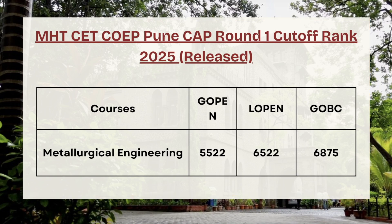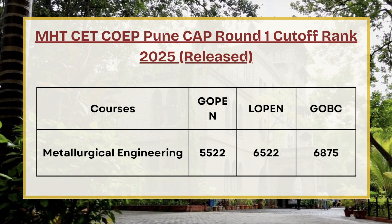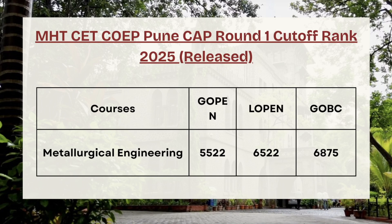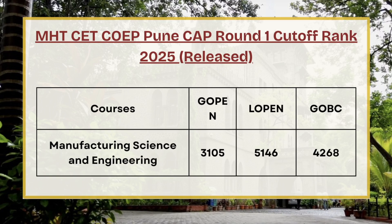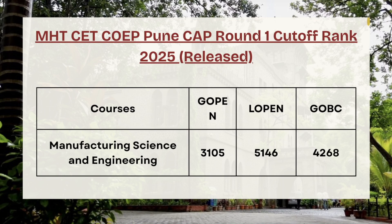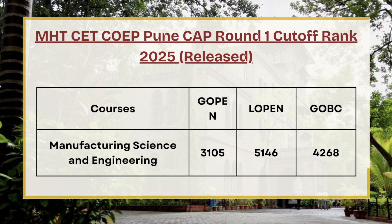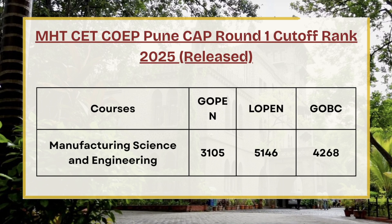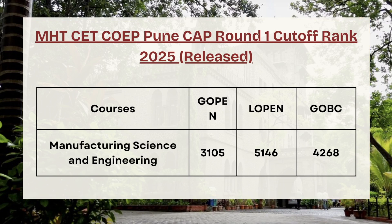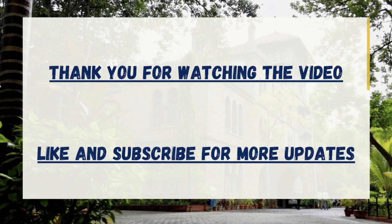For Metallurgical Engineering, for G-Open the cutoff rank is 5522, for L-Open the cutoff rank is 6522, and for GOVC the cutoff rank is 6875. For Manufacturing Science and Engineering, for G-Open the cutoff rank is 3105, for L-Open the cutoff rank is 5146, and for GOVC the cutoff rank is 4268.